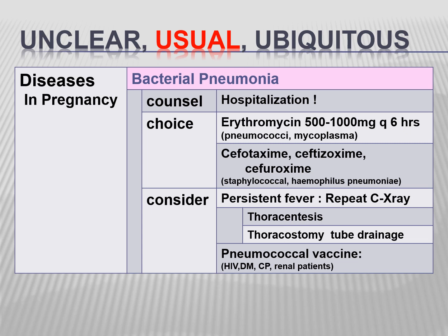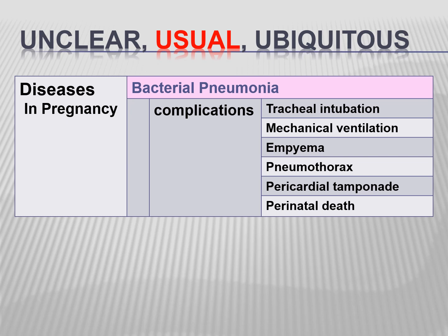For immunocompromised patients, pneumococcal vaccine is recommended. Complications in the pregnant patient include the need for tracheal intubation, mechanical ventilation, empyema, pneumothorax, pericardial tamponade, and perinatal death.